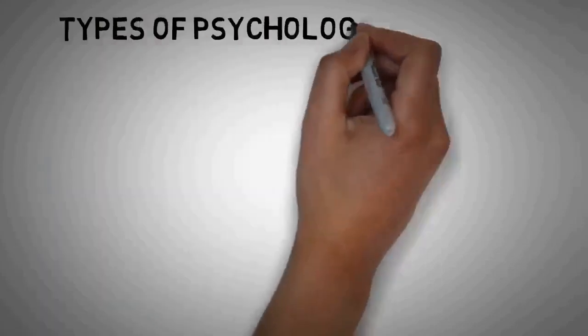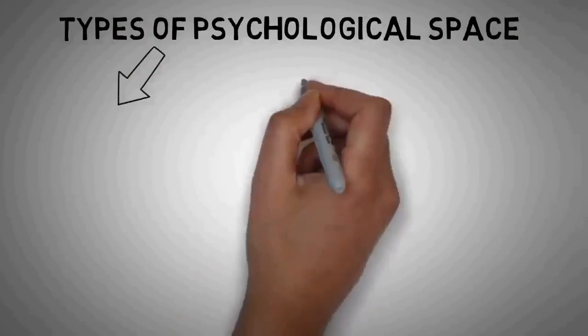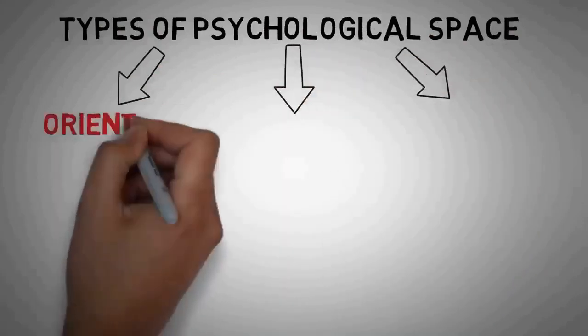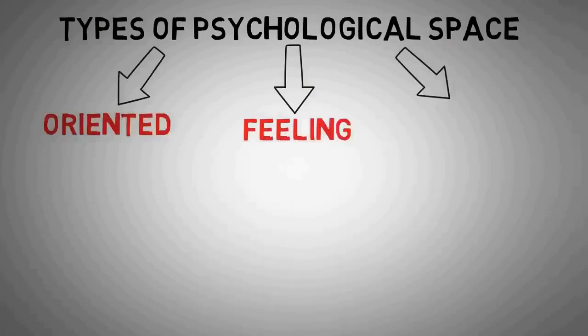So moving further, let's go into the types of psychological space. John Wellwood defines psychological space by dividing it into three different types: oriented, feeling, and open space.